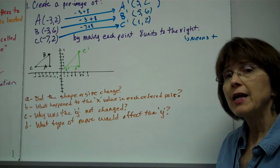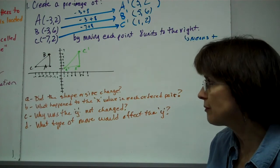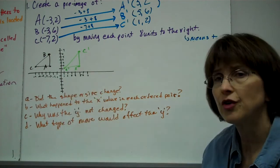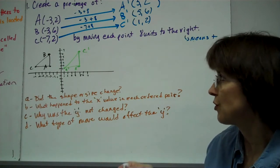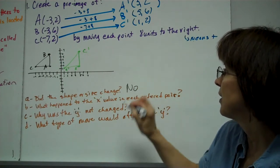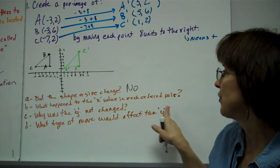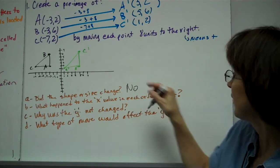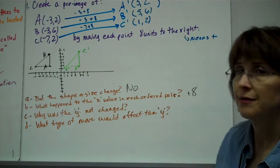Once you do that, then I'm going to answer some questions here. Did the shape or the size change of our translation? The answer is no, it did not. Now what happened to the x value in each ordered pair? We added eight.